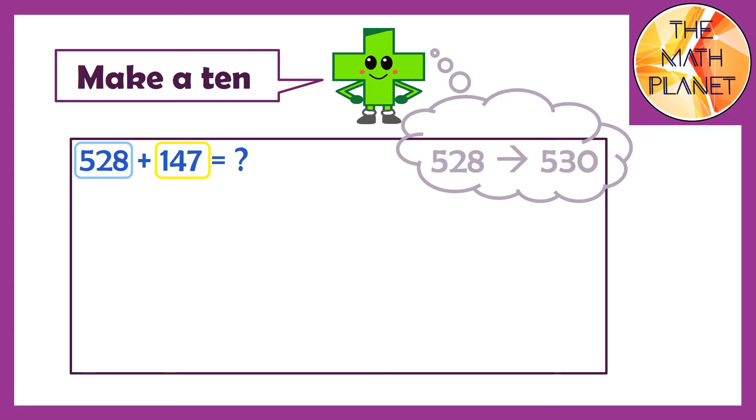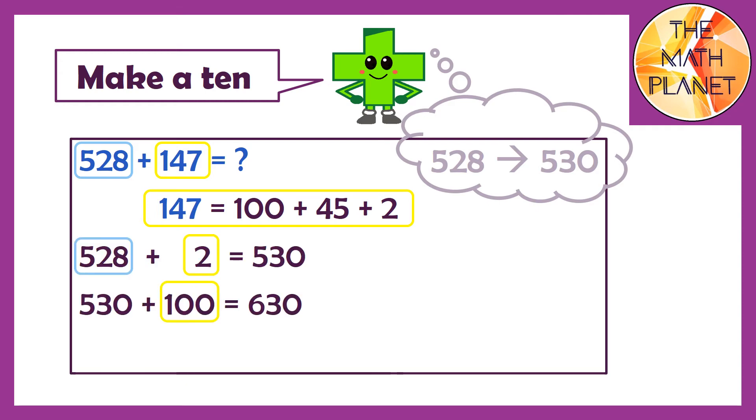So you will need 2 ones from the second addend to make 10. I'll break apart the second addend into 100 plus 45 plus 2. I will take the 2 ones and add them first to 528 to get 530. Then I'll add the 100s part, so it will be 630. Then I'll add the rest of the number to get the final sum which is 675.